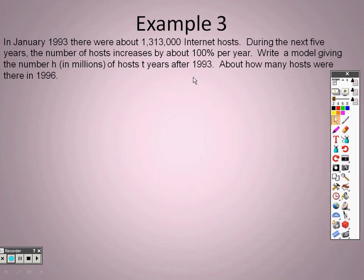So an example three: In January 1993 there are about 1,313,000 internet hosts. During the next five years the number of hosts increases by about 100% per year. Write a model giving the number in millions of hosts t years after 1993. About how many hosts were there in 1996?